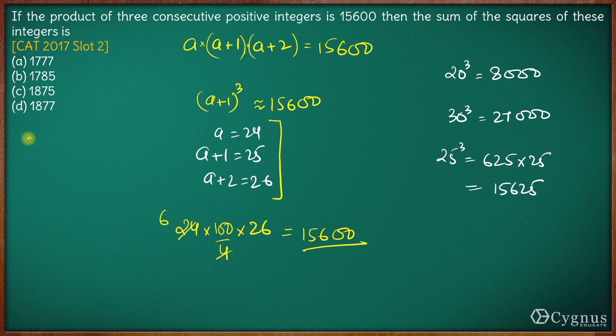So the answer will be 24² + 25² + 26². 24² is 576, 25² is 625, and 26² is 676.